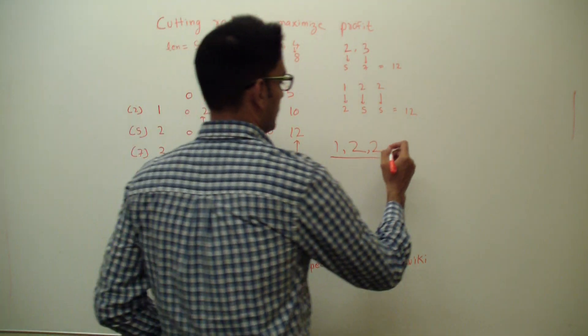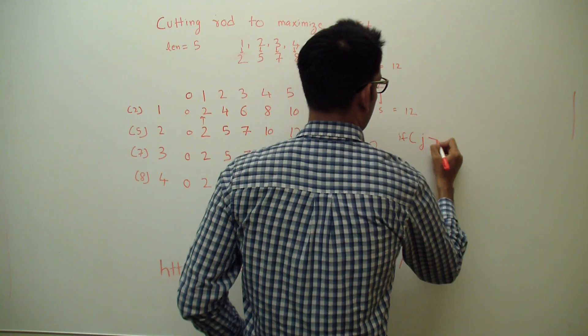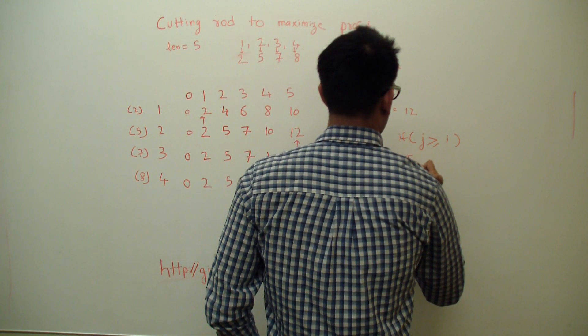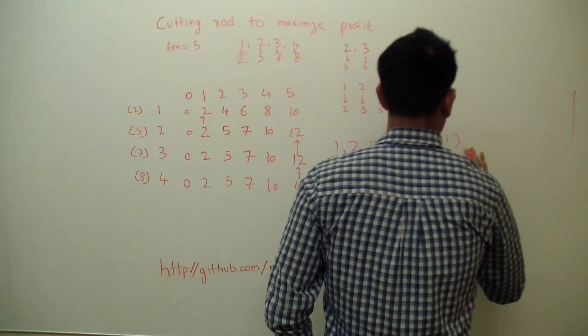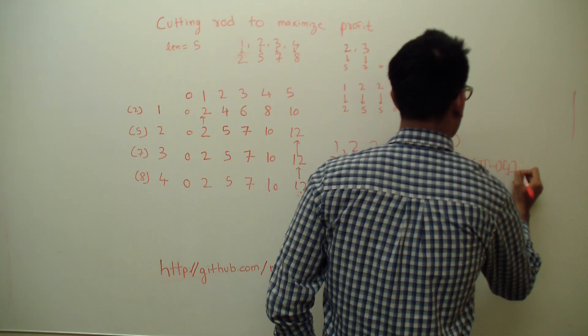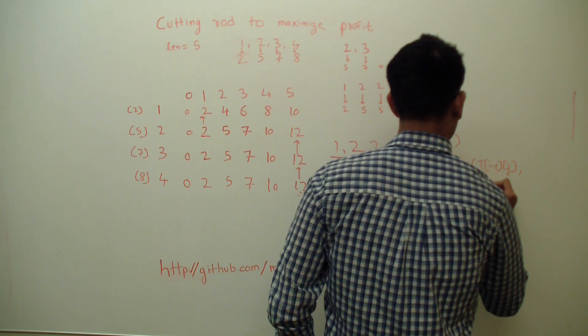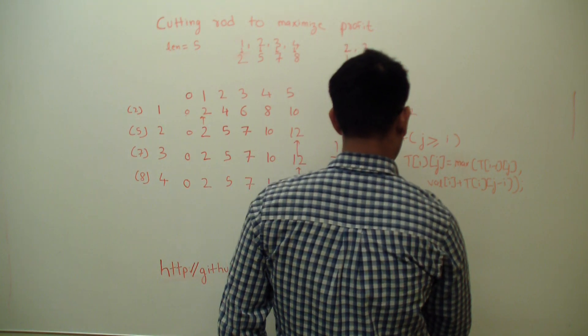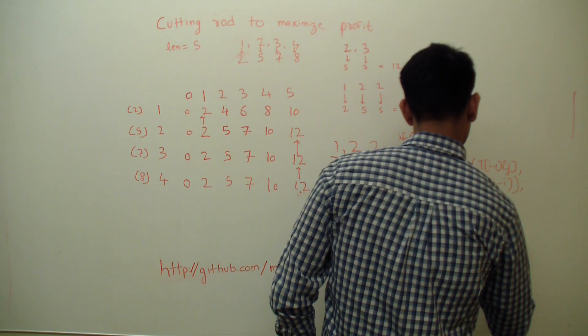What would the code look like? If j is greater than or equal to i, then t of i, j is equal to max of t of i minus 1, j or value of i plus t of i, j minus i. Else, t of i, j is equal to t of i minus 1, j.